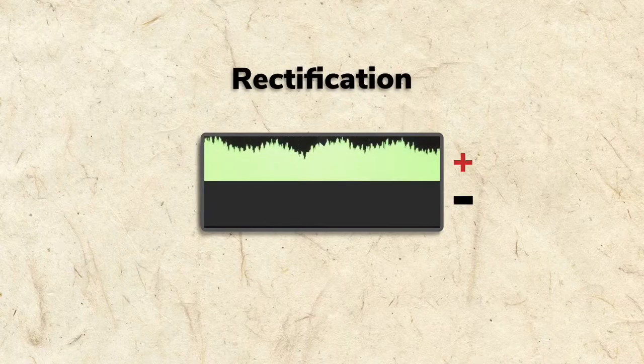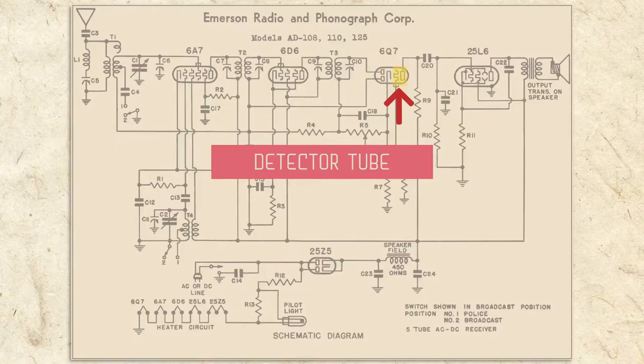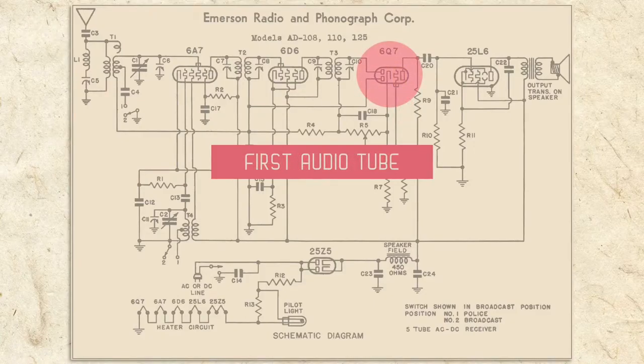As you've learned, removing one polarity of alternating waves is called rectification. The detector tube has a rectifier section to handle this. It also has an amplifier section to boost the audio signal. That's why the detector is also sometimes called the first audio amplifier tube.